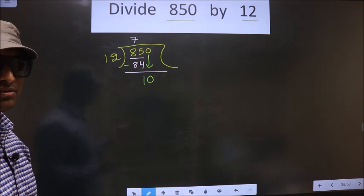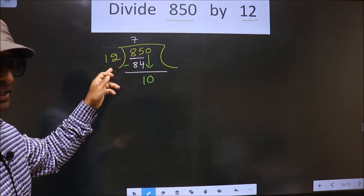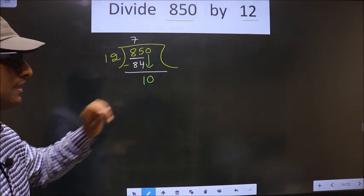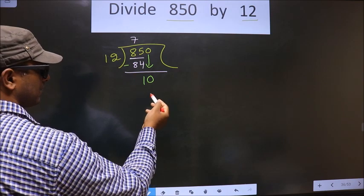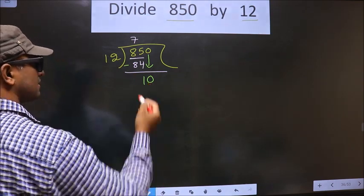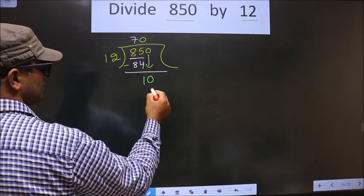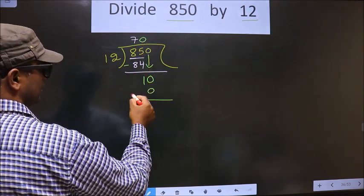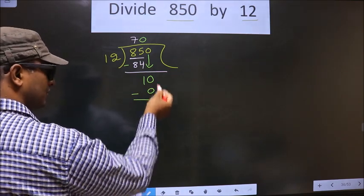Instead, what you should think of is, to this number, what shall we multiply to get a number here? If I multiply by 12, I get 12 here, but 12 is larger than 10. So what we do is we multiply by 0, so 12 into 0 is 0. Now you subtract. Now you get 10 here. We did not bring any number down.